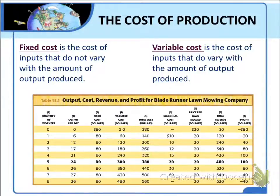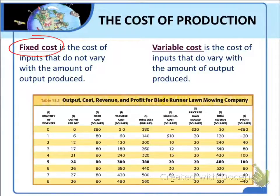Firms face two different kinds of costs: fixed costs and variable costs. A fixed cost is the cost of a firm's fixed inputs — those inputs whose quantity cannot be changed as the output level changes in the short run. Typical sources of fixed costs include the rent paid for buildings, the cost of equipment, and the fees for operating licenses.